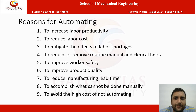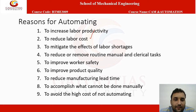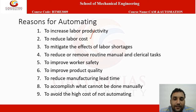What are the reasons for adopting automation in a manufacturing plant? First, to increase labor productivity. To reduce labor cost. To mitigate the effect of labor shortage. To reduce or remove routine manual and clerical tasks. To improve worker safety. To improve product quality. To reduce manufacturing lead time. To accomplish what cannot be done manually. And to avoid the high cost of not automating.